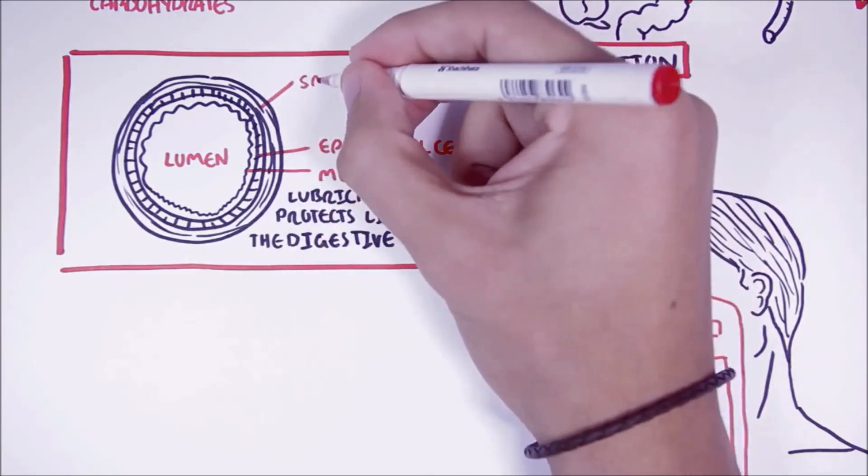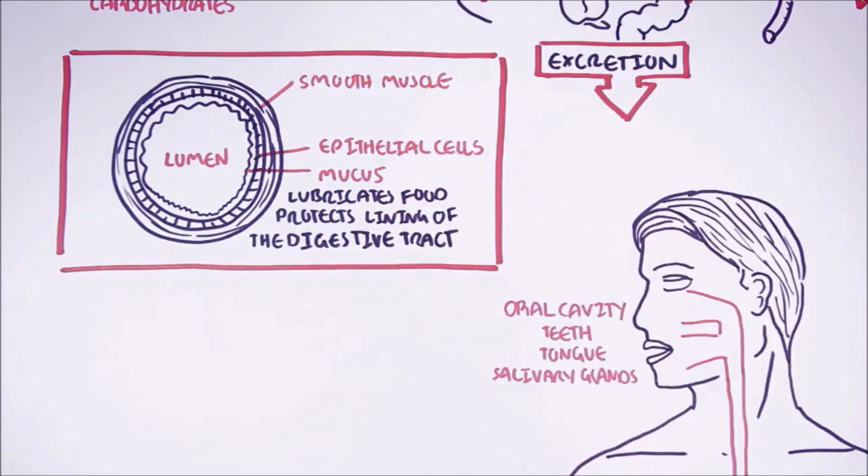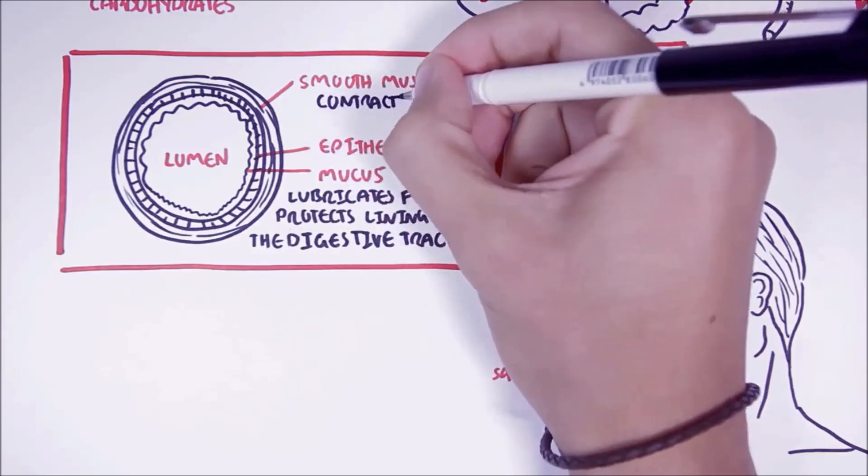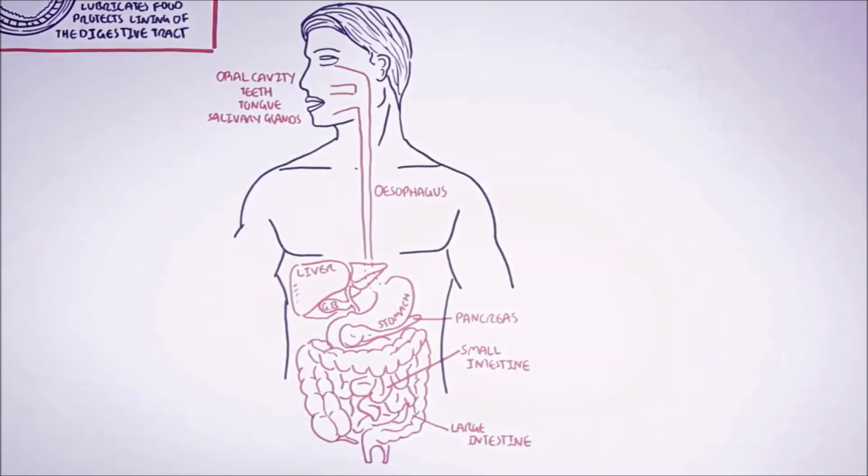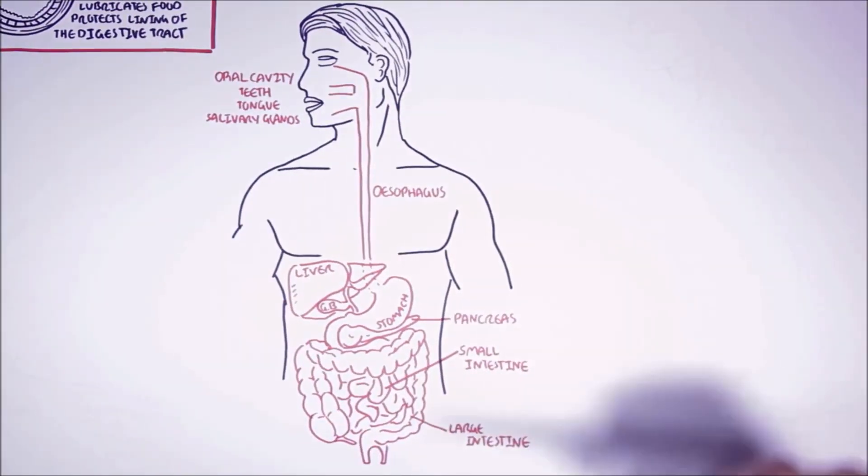The third layer is the smooth muscle layer, the outer layer, which is important in contraction. Through contraction, the smooth muscle allows the food to move through the digestive tract after being ingested.